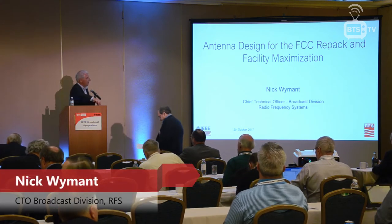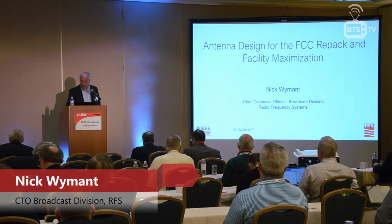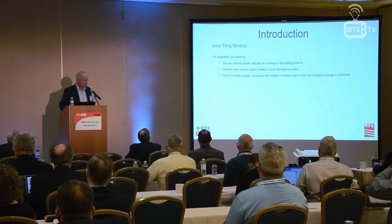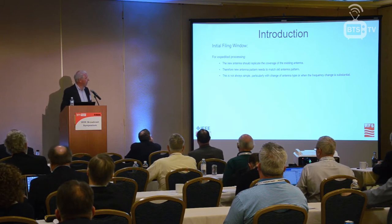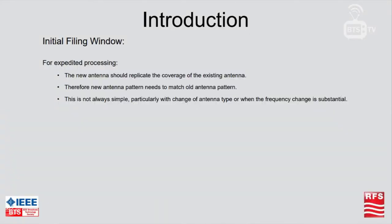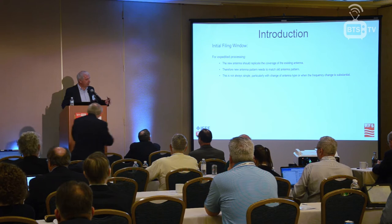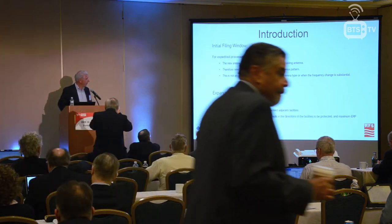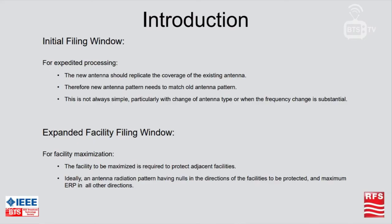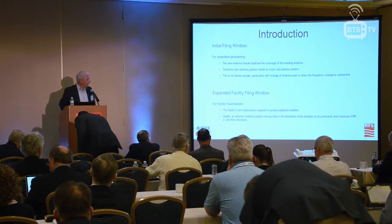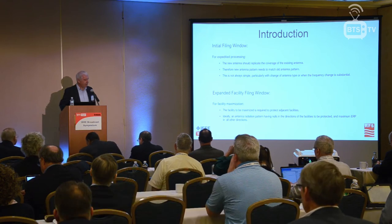Good afternoon everybody. I'll be talking about antenna design for the repack and maximization. We've just been through a filing window, and for that filing you could get faster processing if the antenna replicated the existing coverage area — the antenna pattern really needed to match your old pattern. That's not always simple when you're changing frequency, particularly if there's a large change. Now in the expanded filing window, if you want to maximize your facility and increase coverage, you need to protect adjacent facilities on the same channel.